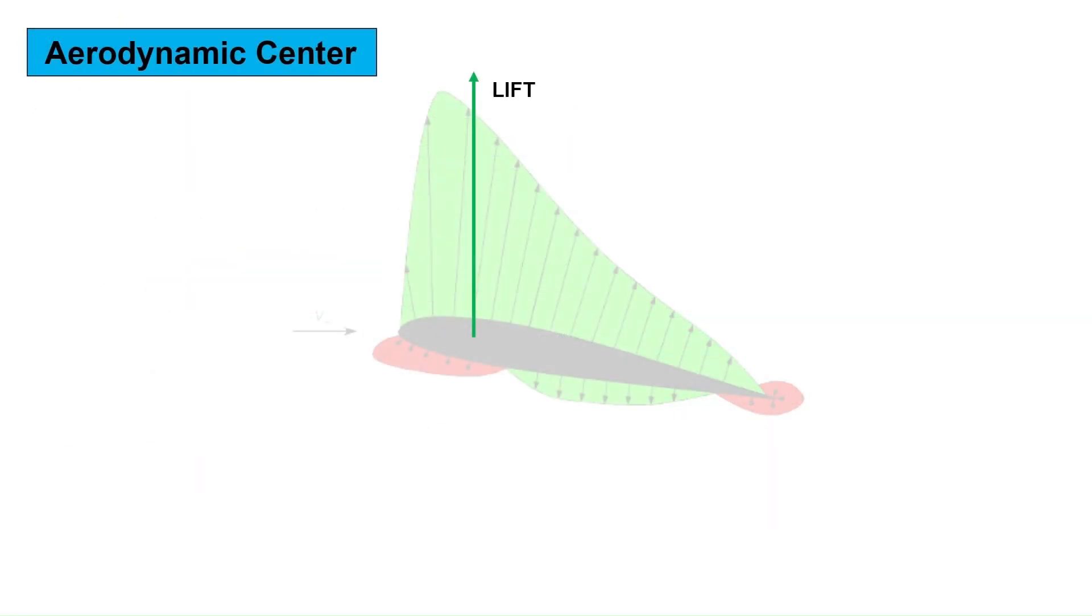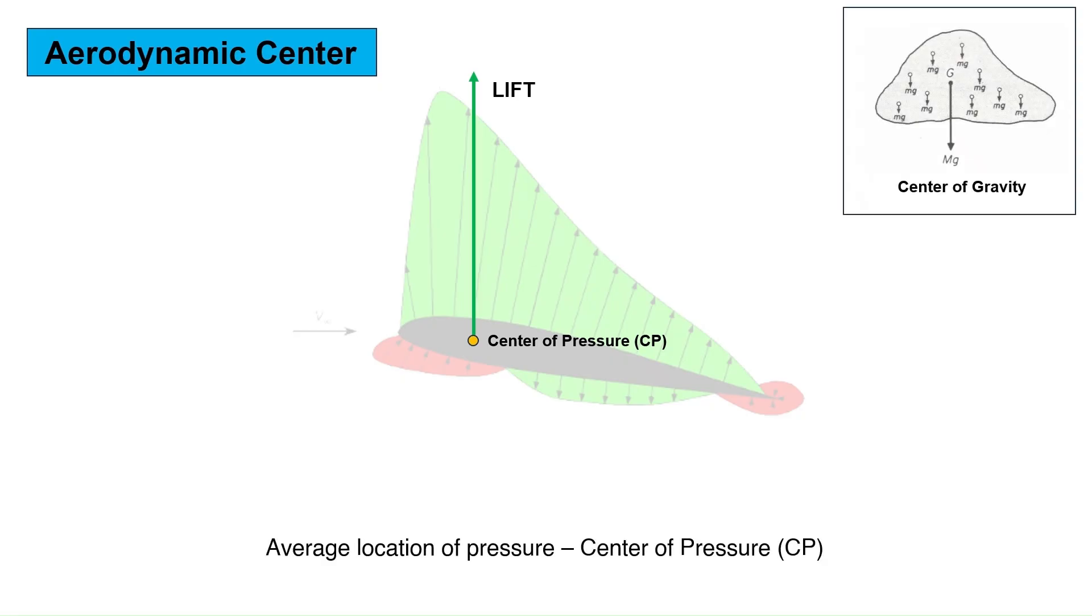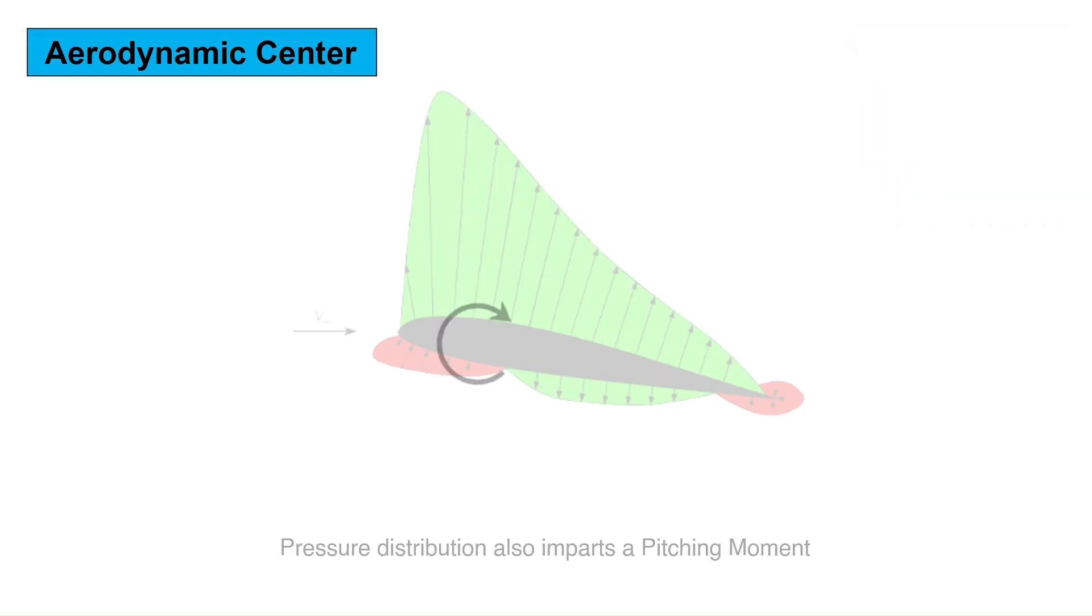We can consider this force to act through the average location of the pressure on the surface of the object. We call the average location of the pressure variation the center of pressure in the same way that we call the average location of the weight of an object the center of gravity. This pressure distribution around the object also imparts a torque or moment on the object.